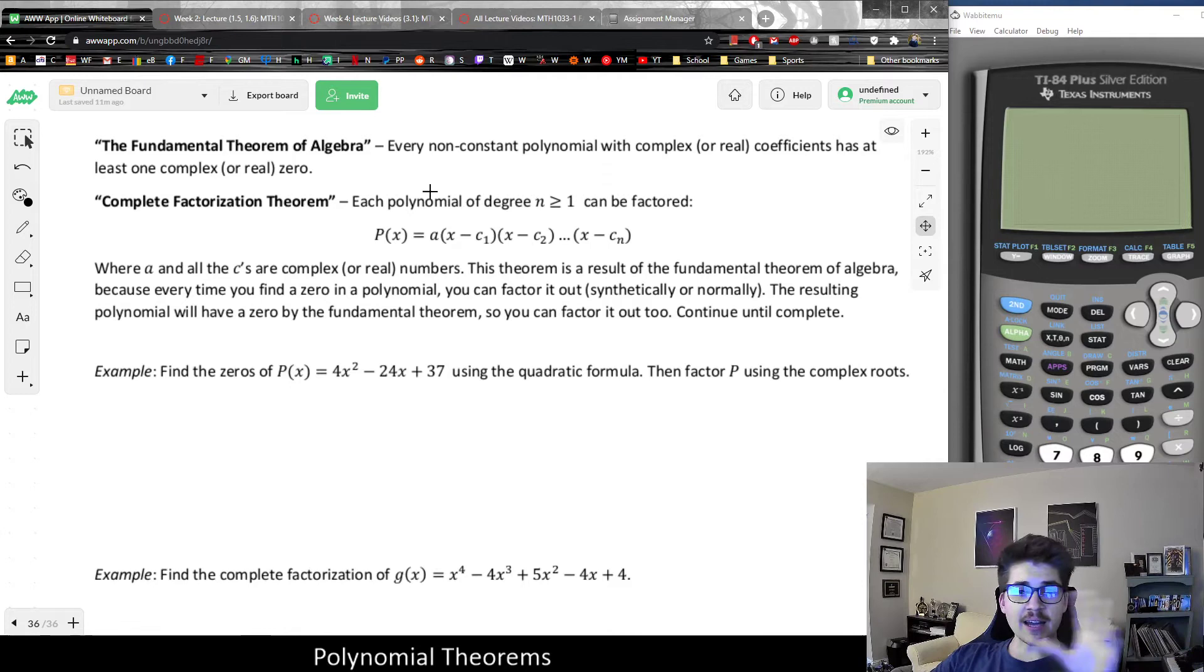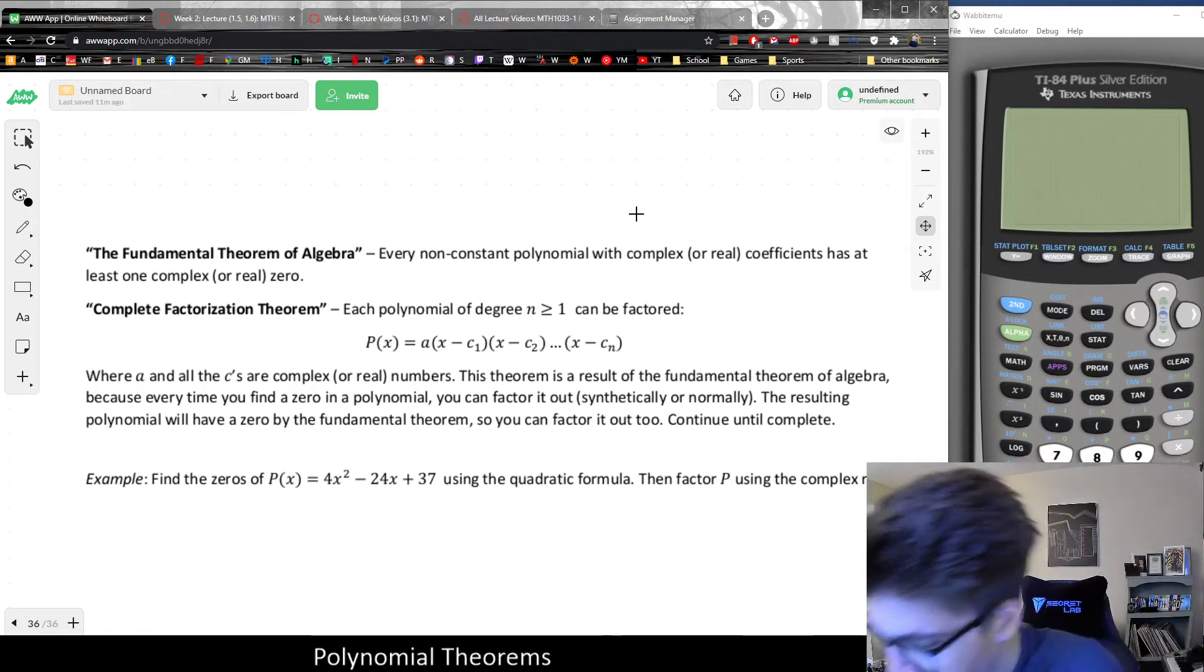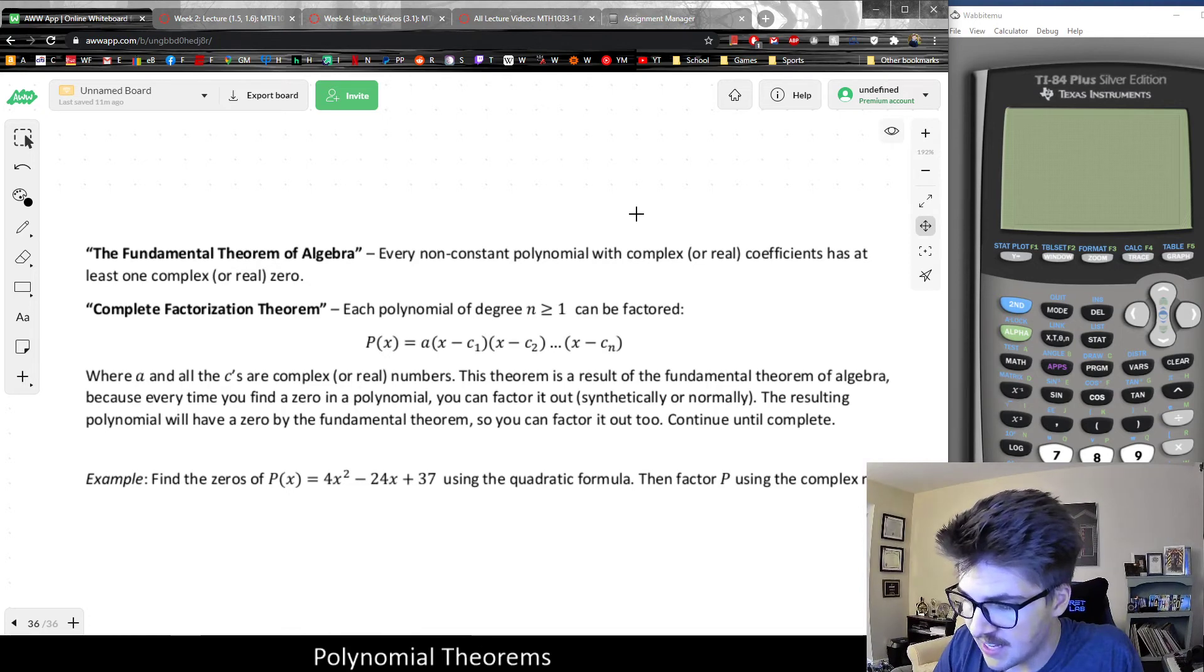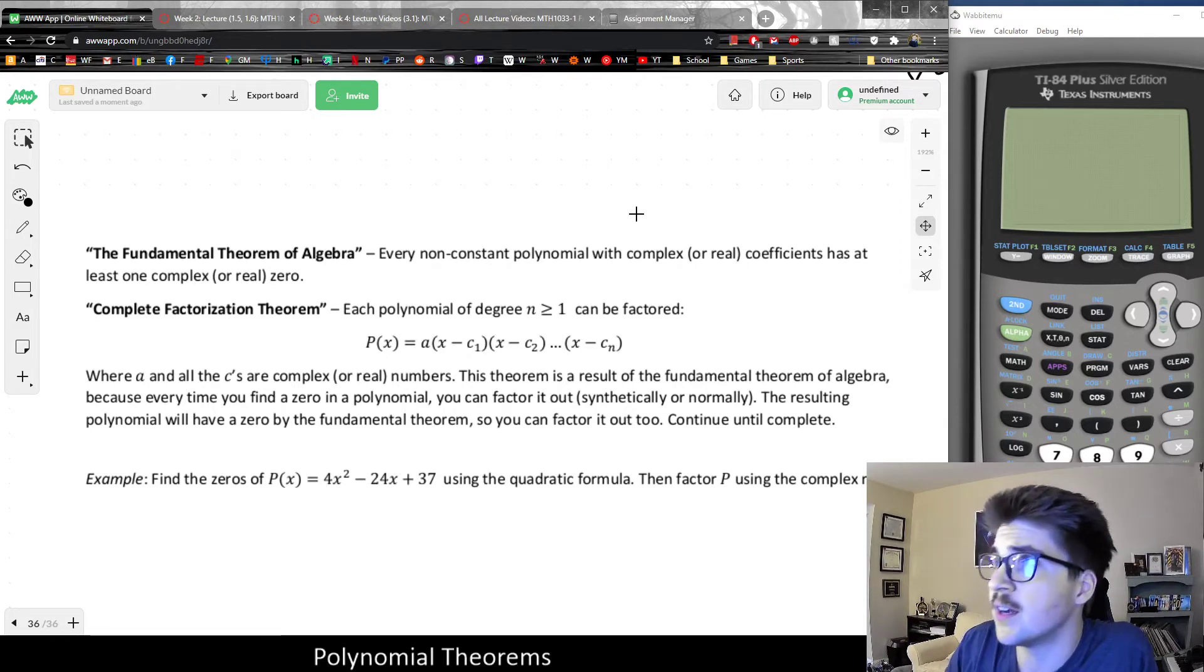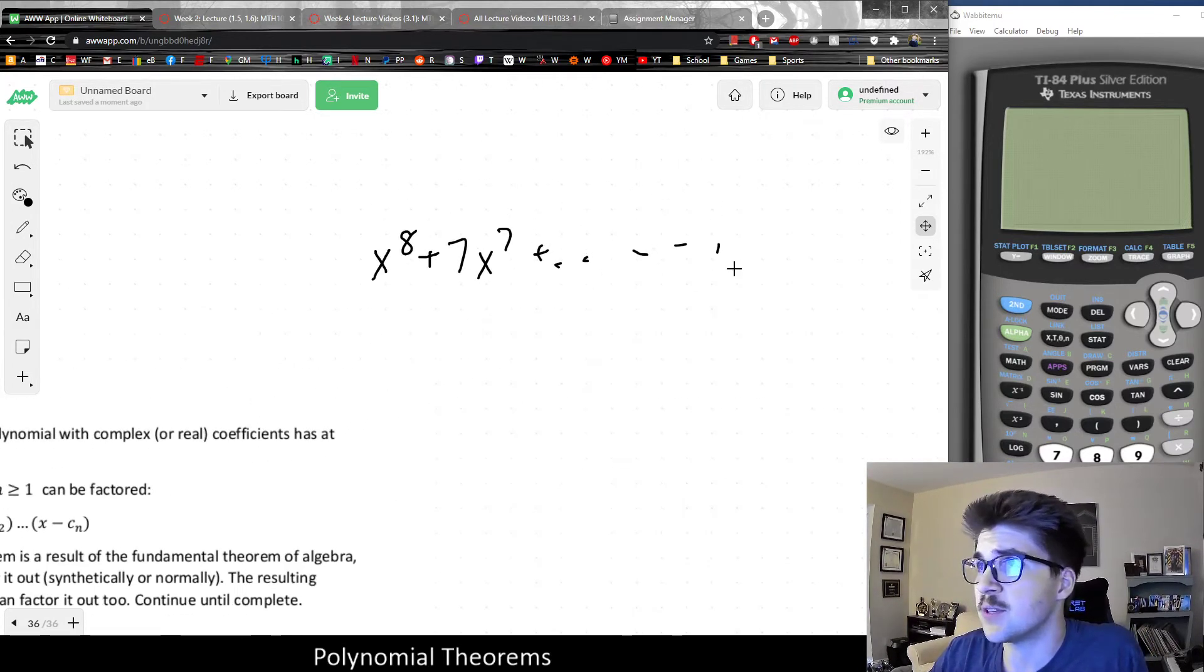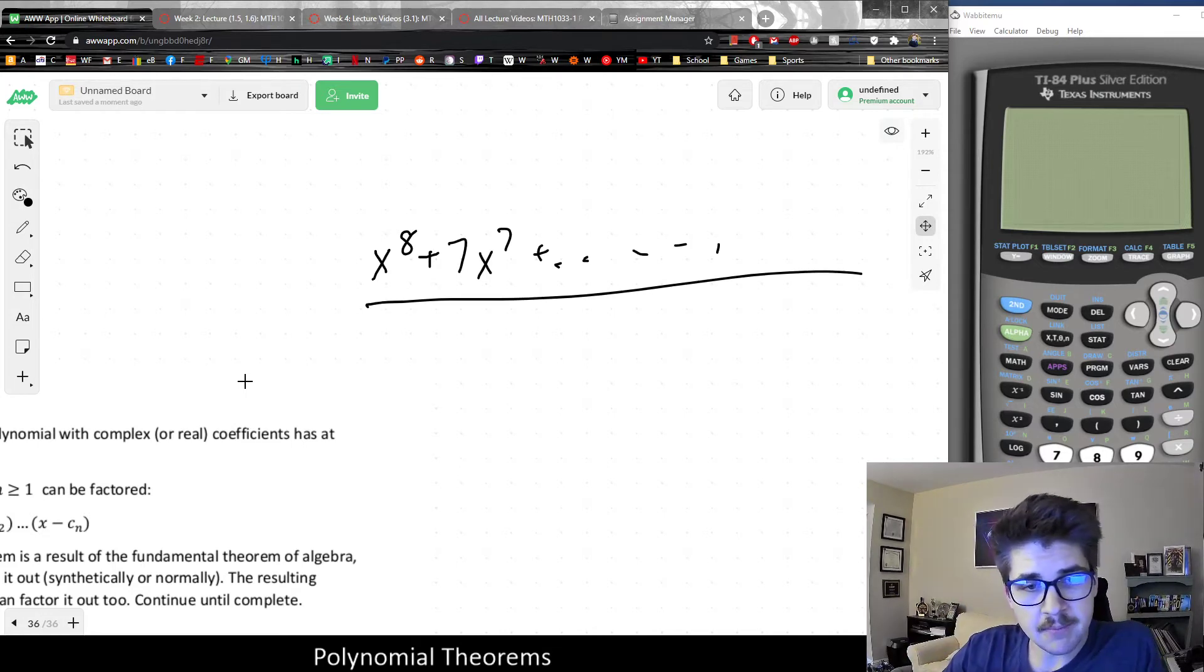So why does this have anything to do with the fundamental theorem? And just to recap, the fundamental theorem said that every polynomial has at least one zero. Well, if you think about this, if any polynomial function, if it has to have one zero, let's just say we're imagining some horrible polynomial like x to the 8 plus 7x to the seventh, something like this. Really, really horrible, really, really long polynomial.